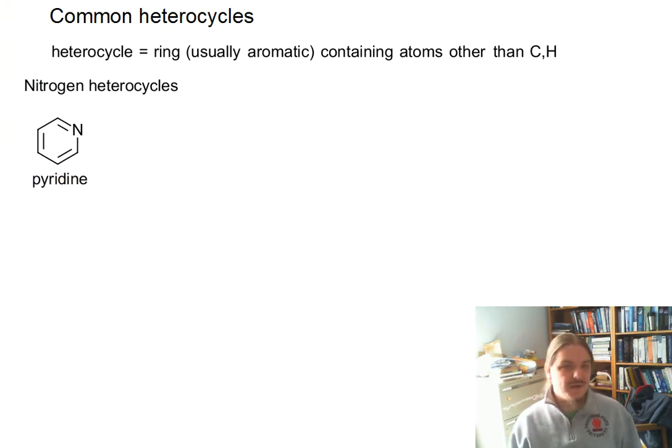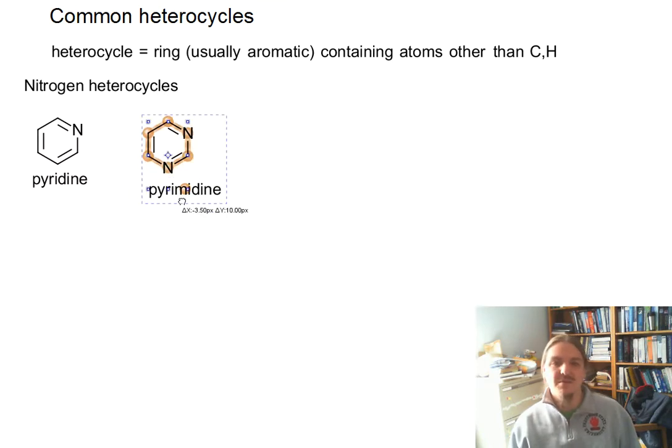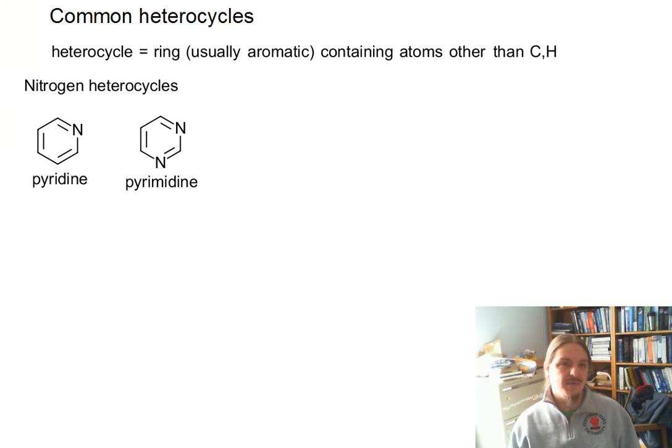In the six-membered ring category, and starting with nitrogen heterocycles, there's pyridine and pyrimidine. So pyrimidine has two nitrogens that appear to be meta to each other, and pyrimidine happens to be one of the backbones for the nucleobases used in DNA and RNA.